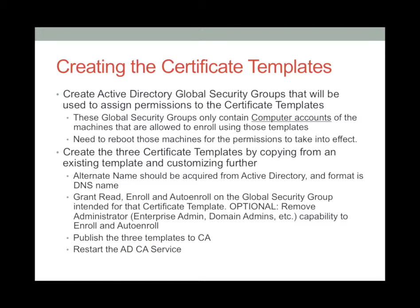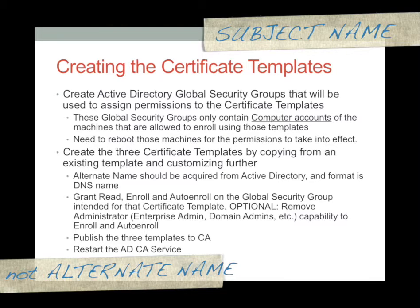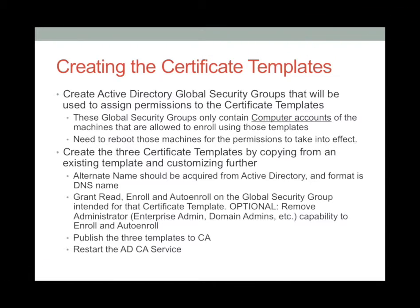A few notes: the alternate name should be acquired from Active Directory and the format should be DNS name. When you create your certificate templates, you need to grant read, enroll, and auto-enroll permissions on the security group intended for that certificate template. There is an optional task to remove enrollment capabilities from administrators — enterprise admin, domain admin, etc. Then you need to publish these three templates to your certificate authority and restart the Active Directory certificate authority service for the publication to take effect.